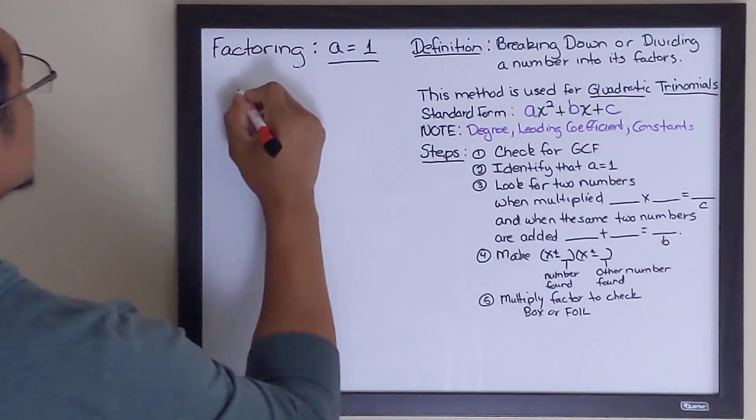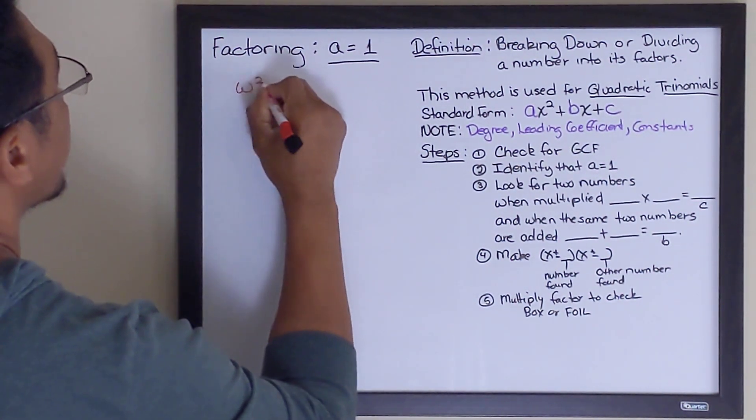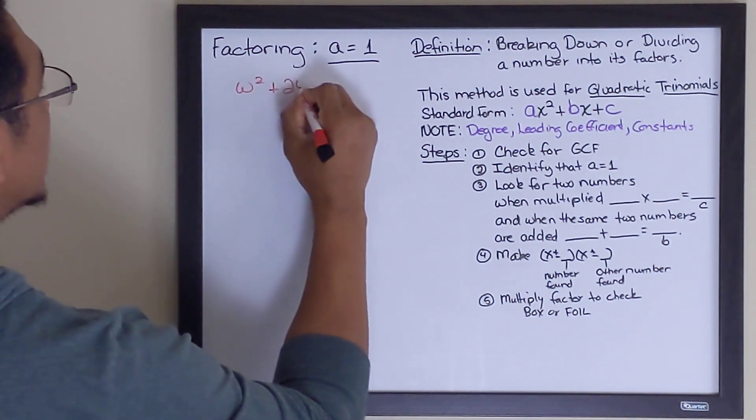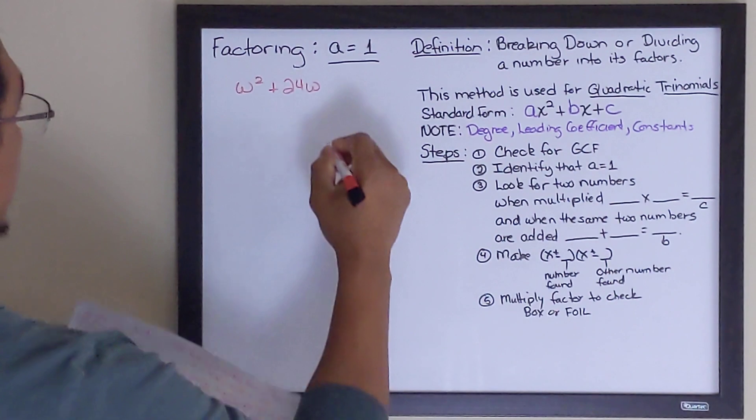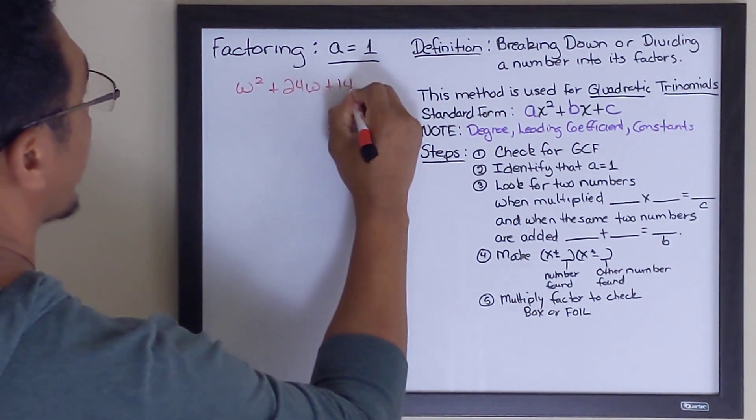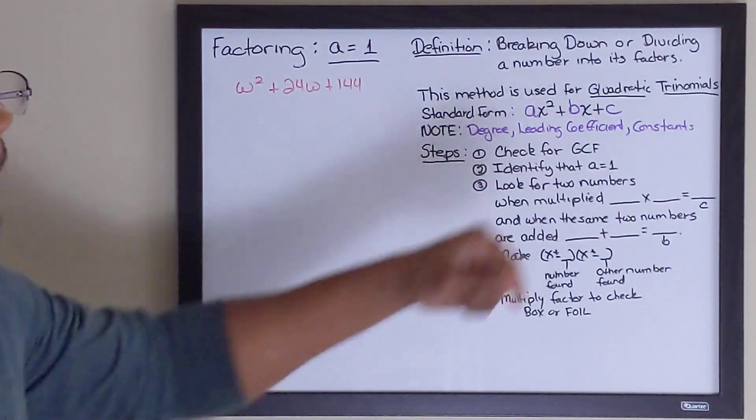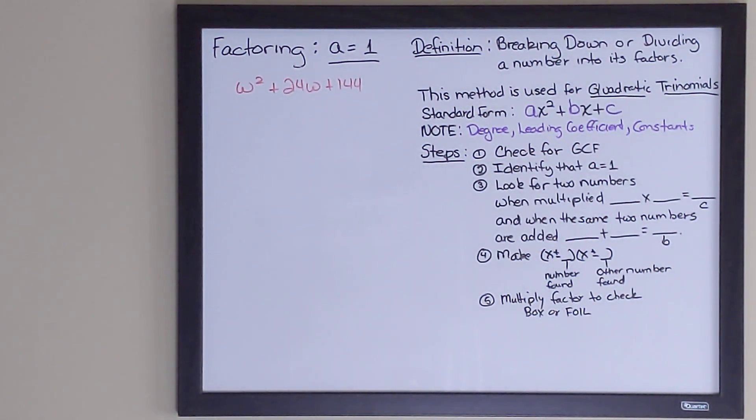The first one is w squared plus 24w plus 144. And let's go through some of our steps to see if we can use a equals one factoring.